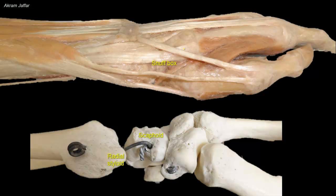Note the boundaries of the anatomical snuffbox, which are made by the long tendons of the extensor compartment of the forearm. In the floor of the anatomical snuffbox, four bones are present from proximal to distal: the styloid process of the radius, scaphoid, trapezium, and the base of the first metacarpal bone.